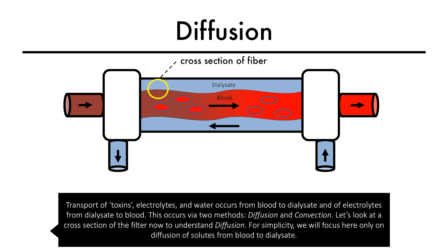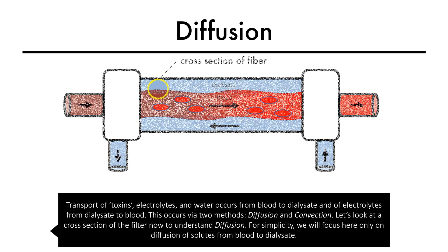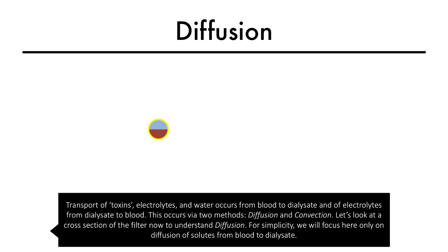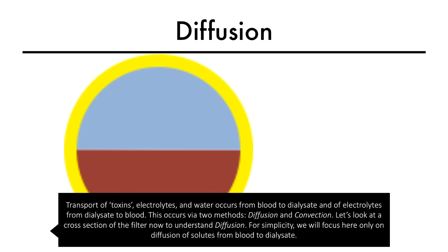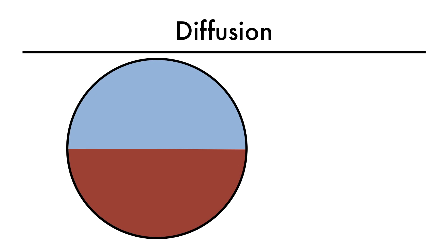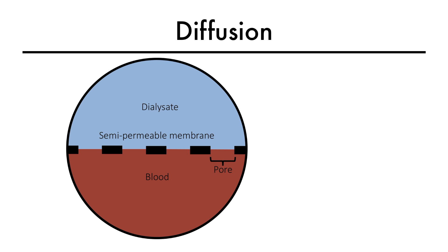Let's look at a cross-section of the filter to understand diffusion. We will focus here only on diffusion of solutes from blood to dialysate. This is a cross-section inside of a hemodialysis filter, with dialysate on one side and blood on the other, separated by a semipermeable membrane.